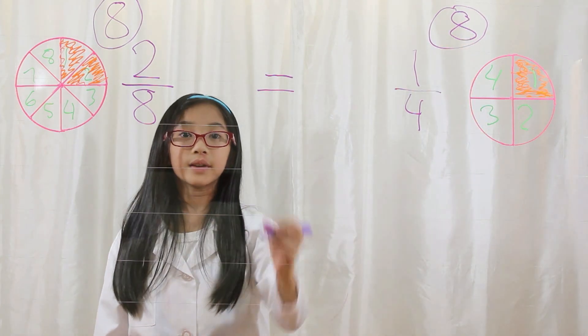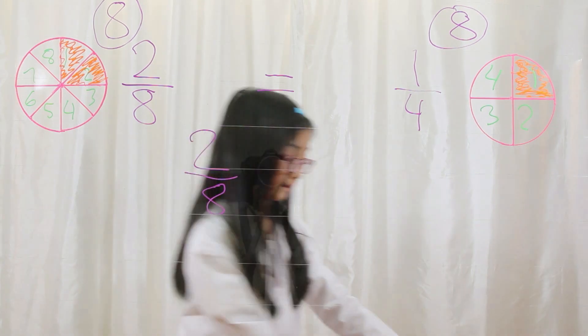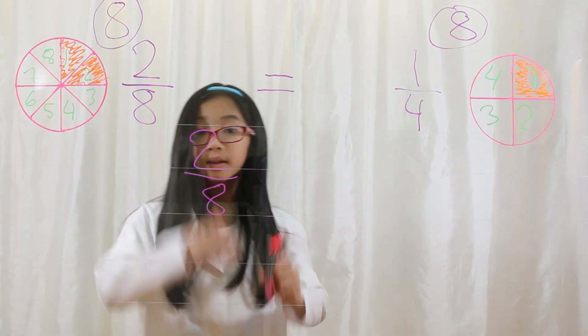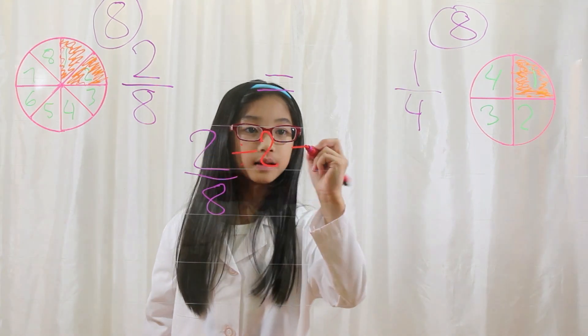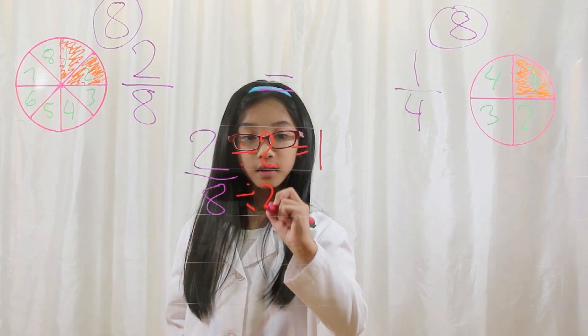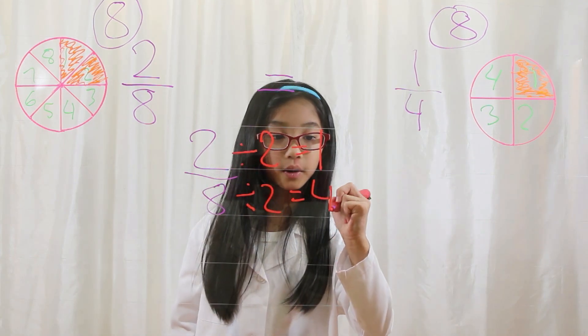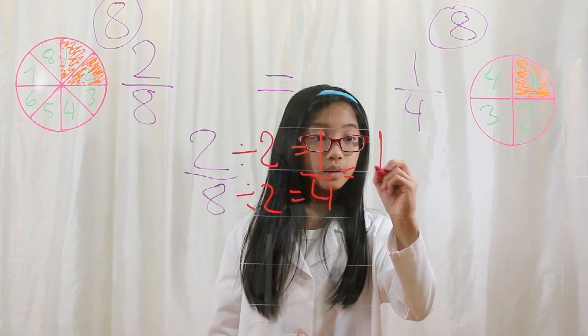Here's another way to think of it. Two eighths. You can divide it by two. Two divided by two equals one. Eight divided by two equals four. One fourth equals one fourth.